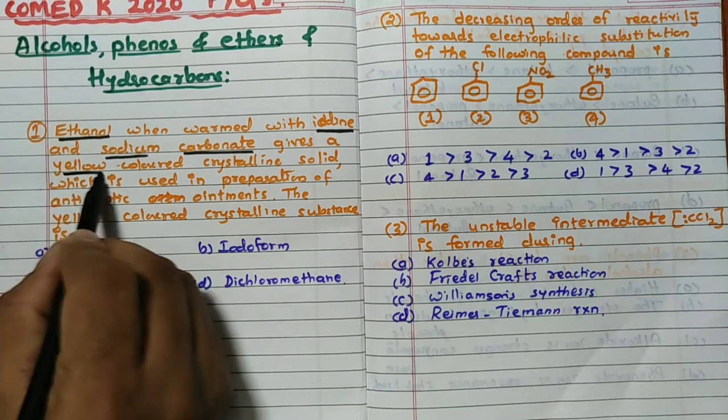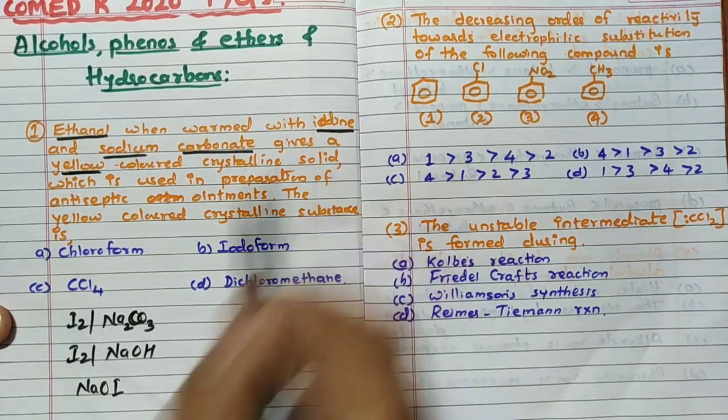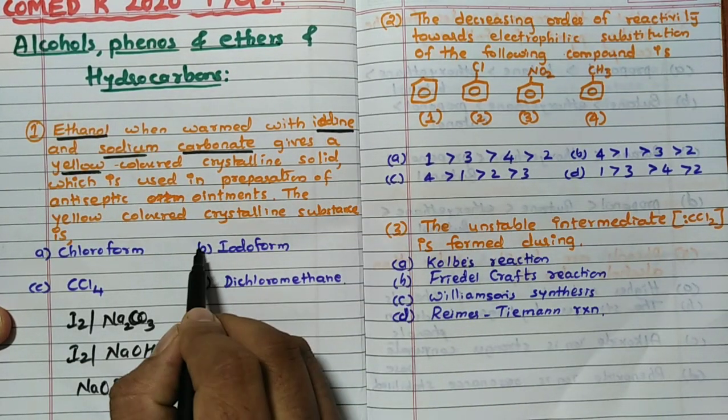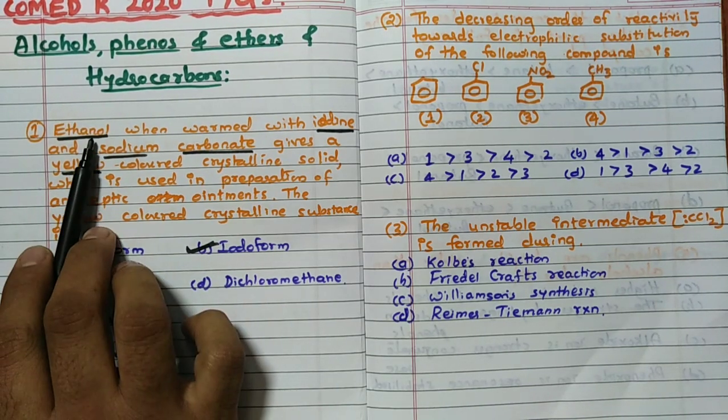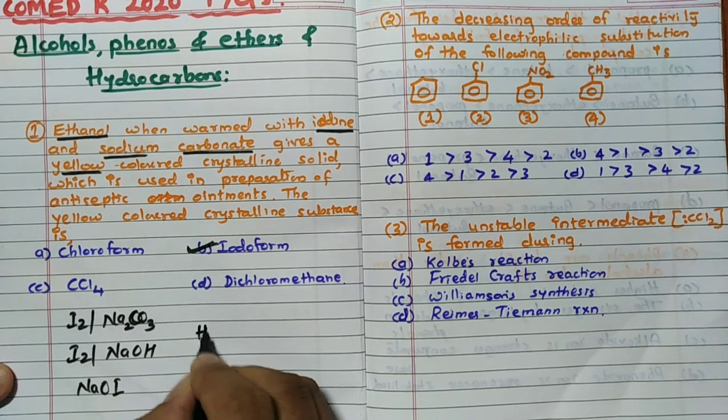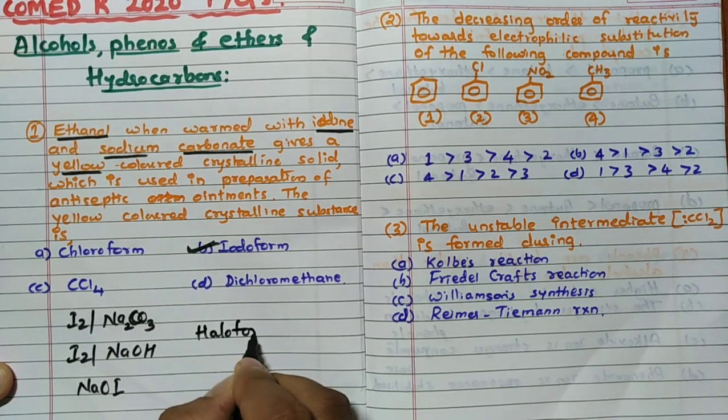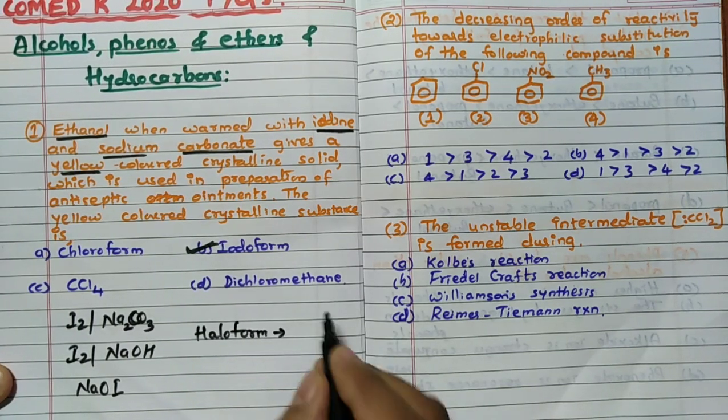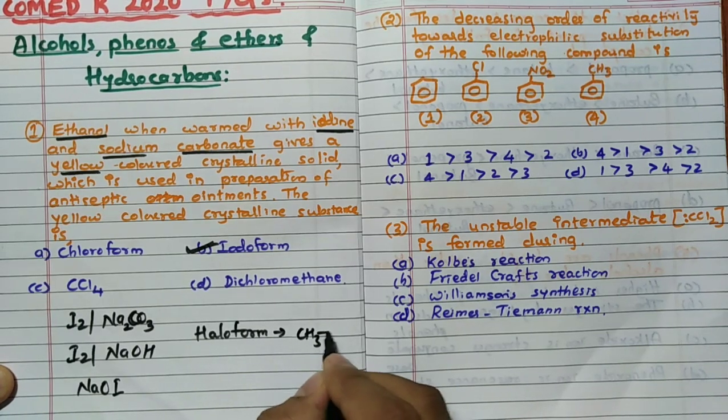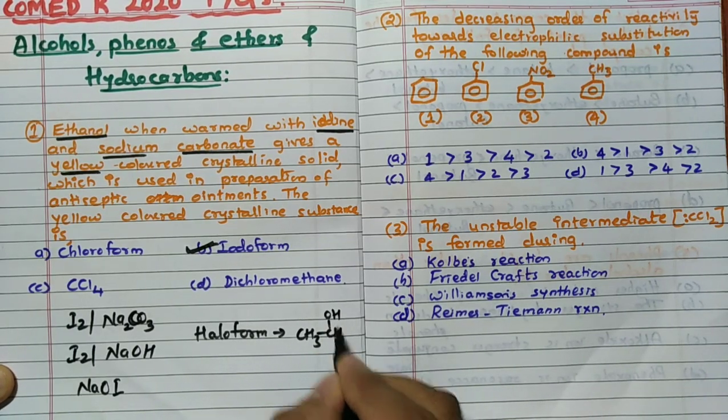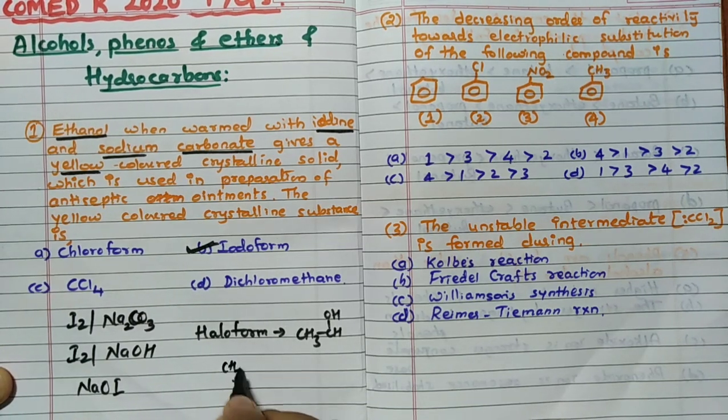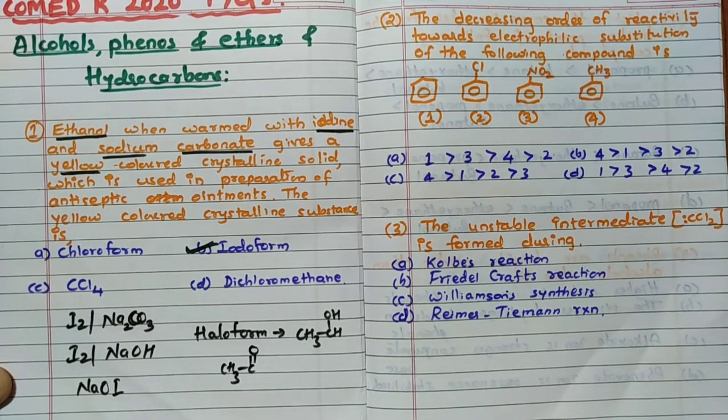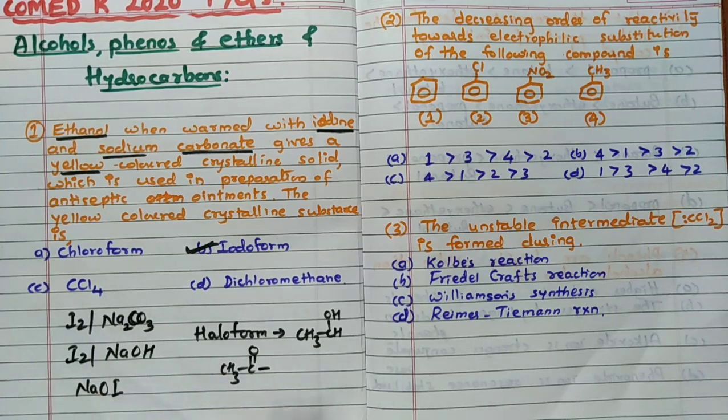So yellow color compound they are telling and iodine they have used, then definitely iodoform should be the correct answer here. The reason for that is ethanol can undergo haloform reaction. Remember haloform reaction can be undergone by CH3CHOH group or CH3C=O. So it is there in ethanol. So iodoform is the correct answer.